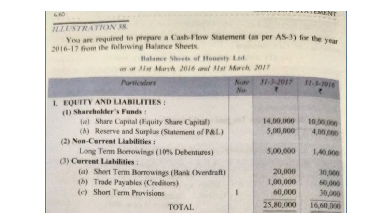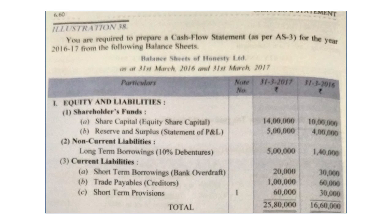This share capital issuance you will write in financing activities. You will have to understand and learn where these items are to be written — otherwise you will remain in confusion. Under reserves and surplus, the statement of P&L shows profit was rupees 4 lakh last year and now rupees 5 lakh, meaning rupees 1 lakh more profit was earned in 2017. Under non-current liabilities, long-term borrowings — 10% debentures — increased from rupees 1 lakh 40,000 to rupees 5 lakh, meaning more debentures of rupees 3 lakh 60,000 have been issued.